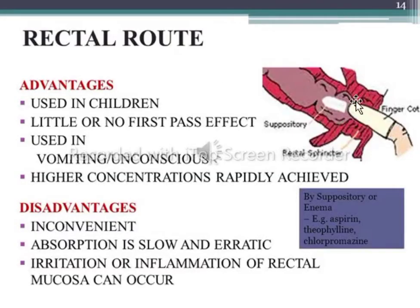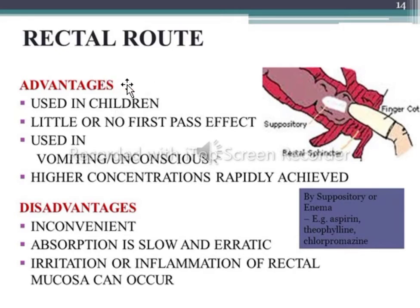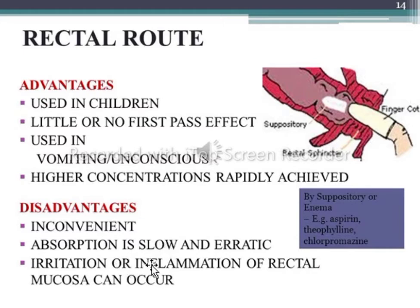The rectal route involves drug administration through the rectum by suppository or cleansing enema — for example, diazepam, theophylline, and chlorpromazine. The advantages are that it is used in children, has little or no first pass effect, and can be used in vomiting, unconscious, or uncooperative patients. The disadvantages include inconvenience, patient unacceptability, pain, slow and erratic absorption, and risk of irritation and inflammation of the rectum.